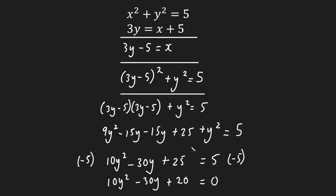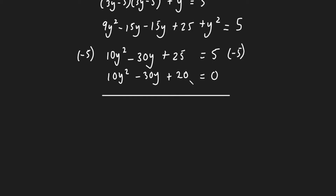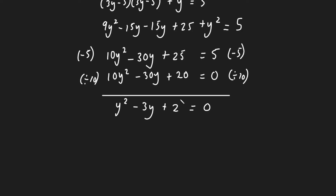Which brings us to our fourth step: solve this quadratic equation. I can see there is a common factor of 10 in all three terms, so I'll divide the entire equation by 10 on both sides, giving me y² − 3y + 2 = 0. I'm going to look for two numbers that multiply to give 2 and add to give −3 — and those are −2 and −1. So I'll factorize: (y − 2)(y − 1) = 0.